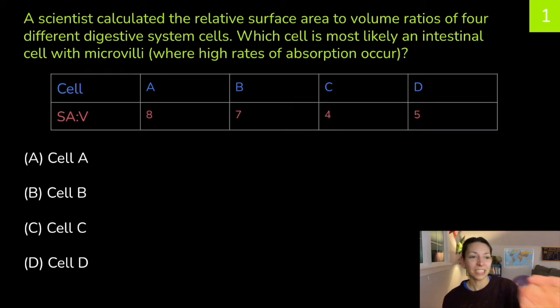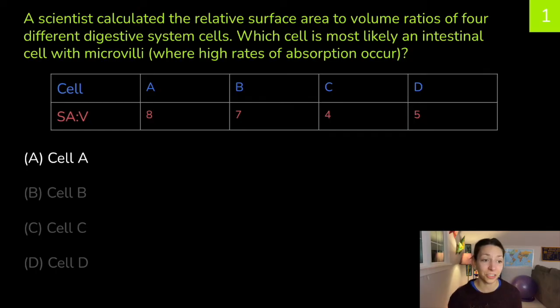Correct answer is cell A. Cell A has the highest surface area to volume ratio, which means there's going to be more points for diffusion if nutrients can diffuse into the cell for absorption.